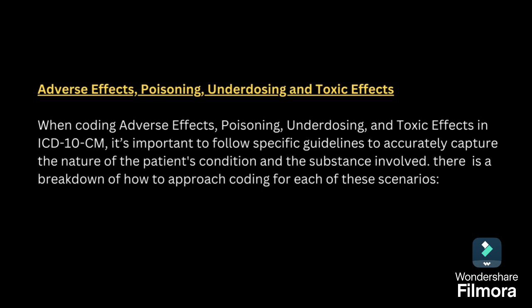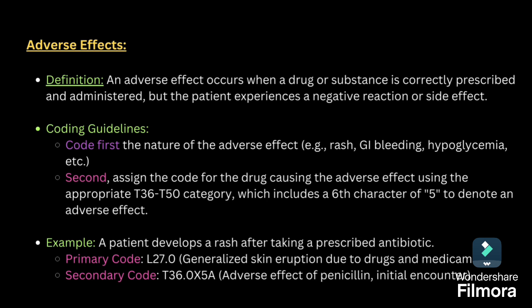Adverse effect, poisoning, underdosage and toxic effect: whenever coding for these, it is important to follow specific guidelines. Adverse effect occurs when a drug or substance is correctly prescribed and administered, but the patient experiences a negative reaction or side effect. For this, code first the nature of the adverse effect — what complication the patient has got — and second, code for the adverse effect of that drug.